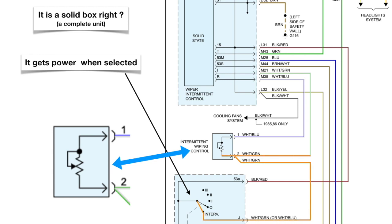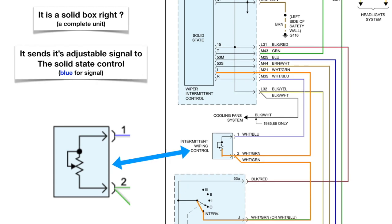The power goes up through the intermittent wiping control and it goes into the wiper intermittent control. That potentiometer or adjustable sensor, we're going to color that blue because it is a signal.